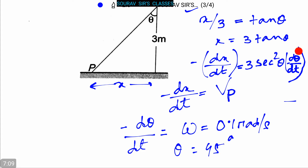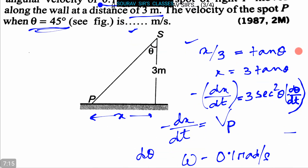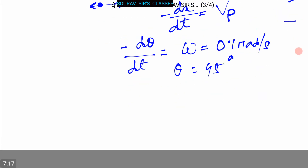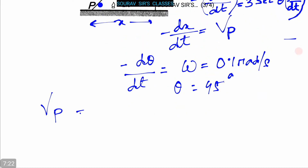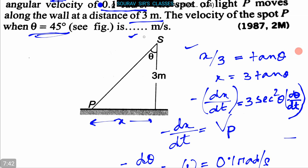Substituting θ = 45° and dθ/dt = 0.1 rad/s, the velocity of spot P is vP = 3·sec²(45°) × 0.1 = 3 × 2 × 0.1 = 0.6 meter per second. So the velocity of spot P when θ is 45° is 0.6 meter per second.